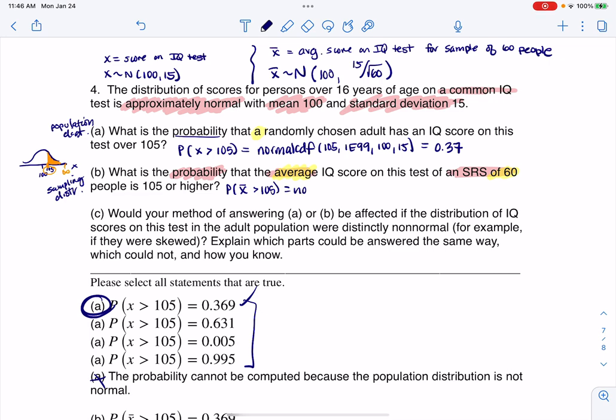So I'm going to go with normal CDF. Same thing. We're going to go low, high, mean. And this time, we're going to put the standard error of 15 over the square root of 60, whatever that number is equal to.